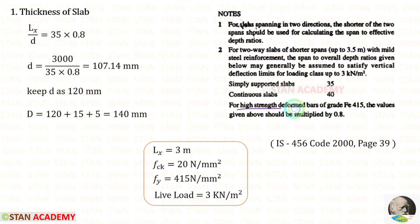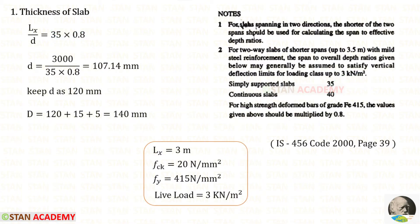For high-strength deformed bars of grade Fe415, the values given above should be multiplied by 0.8. Our Fe is 415, so we multiply 35 by 0.8. For the effective depth d, we get 107.14 millimeter. We can round that to 120 millimeter.